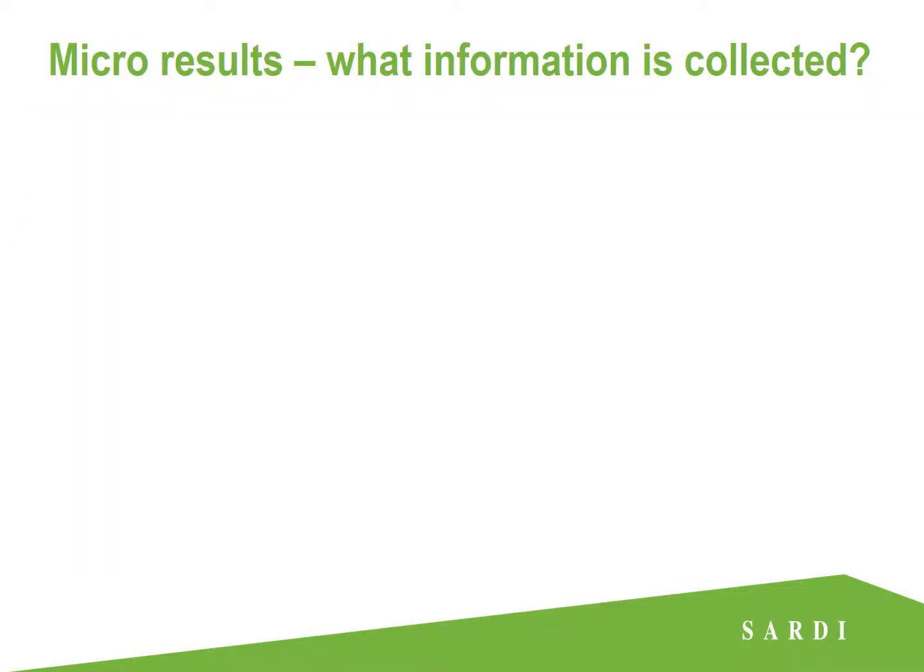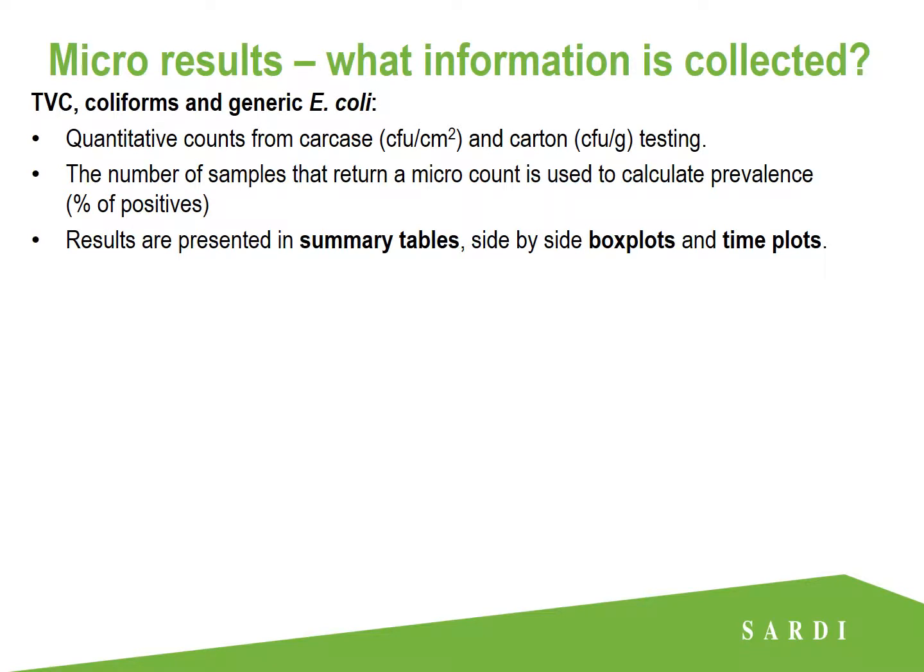What type of micro information is collected? For our TVCs, coliforms and generic E. coli, we have quantitative counts from carcass and carton testing. They're in different units because the carcass is a swab, whereas carton is actually a sample. The number of samples that return a positive micro count is used to calculate prevalence. Results for TVC, coliforms and generic E. coli are presented in summary tables, side-by-side box plots and time plots, and we'll go through each of those plot types in this presentation.